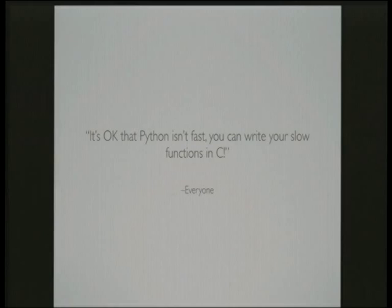We all know that Python might not be the fastest language out there. But everyone always says, well, that doesn't matter because if you've got any slow functions, you can rewrite them in C. And probably like many of you, I'd always heard that you can integrate Python with C, but I'd never actually given it a try because I thought it would be too difficult. But it turns out it's probably easier than you think. So this talk is about, given that I have some code that runs faster in C, how do you actually integrate that with Python?